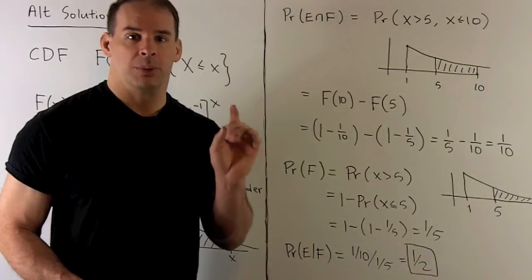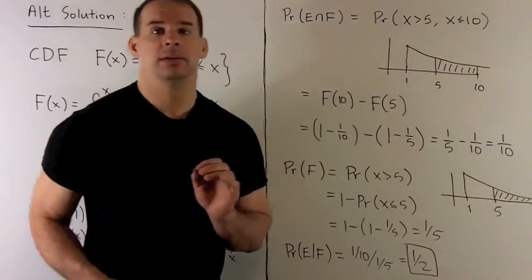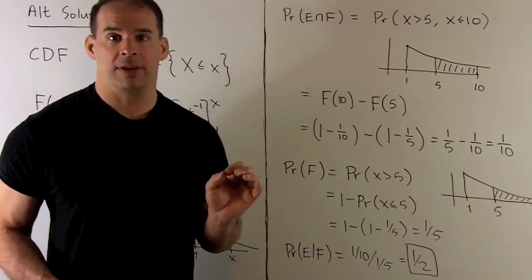Put things into our conditional probability formula. Our answer is 1 half again. So, second method checks our first method.